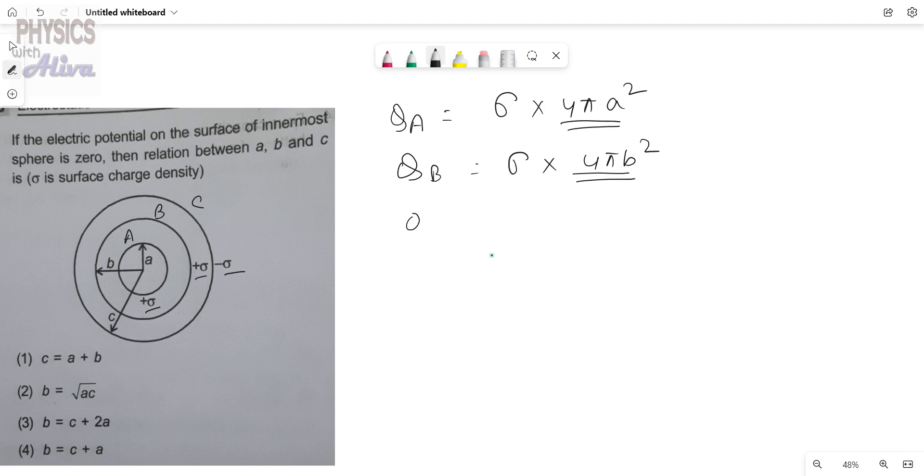And for third sphere, sphere C, the total charge is sigma into 4πC². This is minus sigma. Right, these are the total charges.